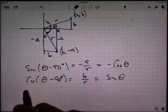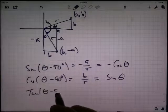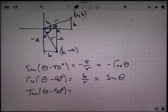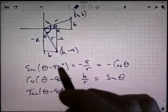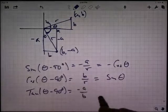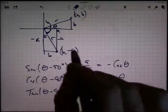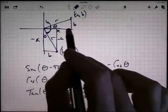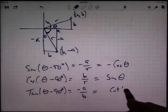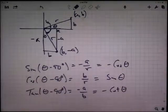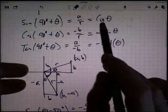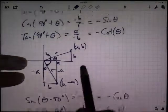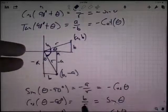The tangent of (theta minus 90 degrees) is Y over X, so negative A over B. A over B is the cotangent, and there's a minus sign in front, so it's negative cotangent of theta. Looking at these results: the sine gave negative cosine, the cosine gave positive sine, and the tangent gave negative cotangent.